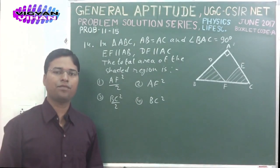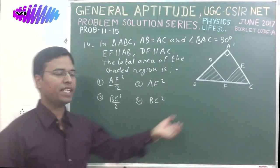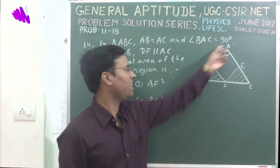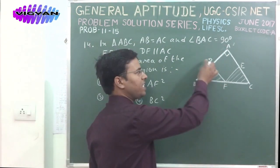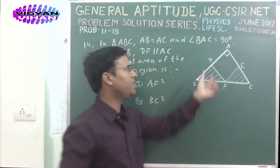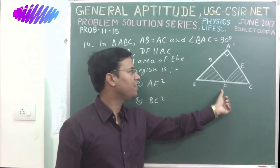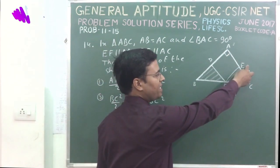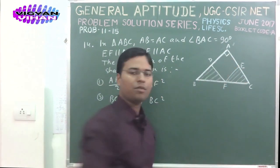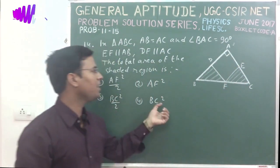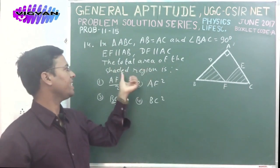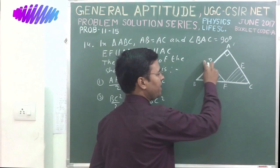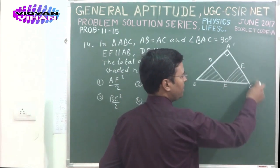Problem number 14: There is a right-angled triangle ABC. Inside it, line segment DF is parallel to AC and line segment EF is parallel to AB. We need to find the total area of the shaded region, which consists of triangles BDF and FEC.